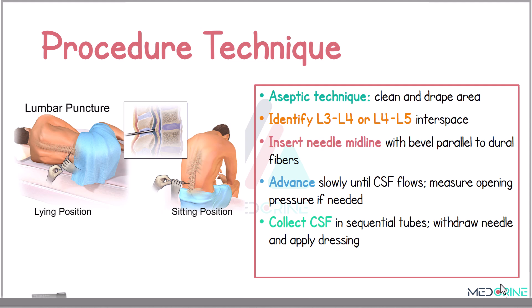During the procedure, an aseptic technique is used during cleaning and draping of the area. Then proceed to identify the correct lumbar interspace, that is the third and fourth intervertebral space or between the fourth and fifth intervertebral space. Then proceed to insert the spinal needle in the midline position with the bevel parallel to the dural fibers. Advance the needle slowly until cerebrospinal fluid flows, then measure the opening pressure if needed, collect the cerebrospinal fluid sample in sequential tubes, and lastly withdraw the spinal needle and apply a sterile dressing.